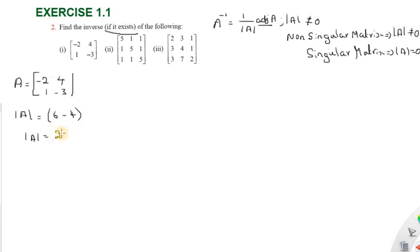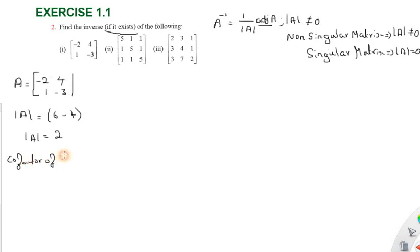Singular matrix has determinant of A equal to zero. Now we find the adjoint of A. We need cofactors: A11, A12, A21, A22. The cofactor is found by eliminating the particular row and column, then applying the sign factor minus one to the power i plus j.